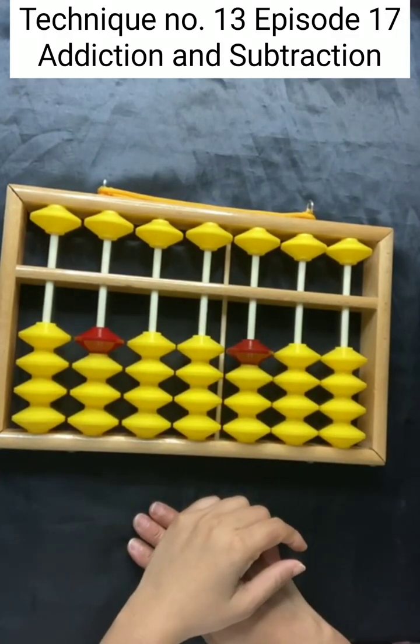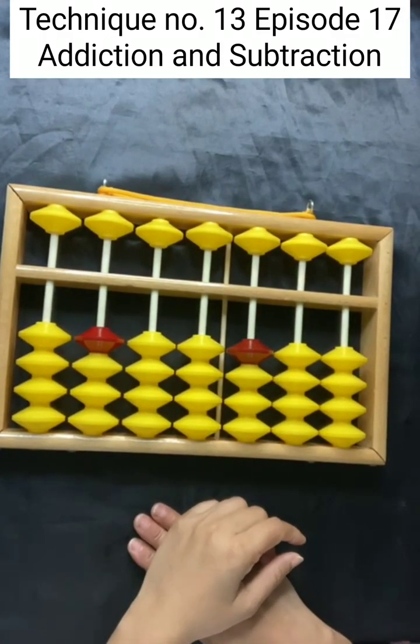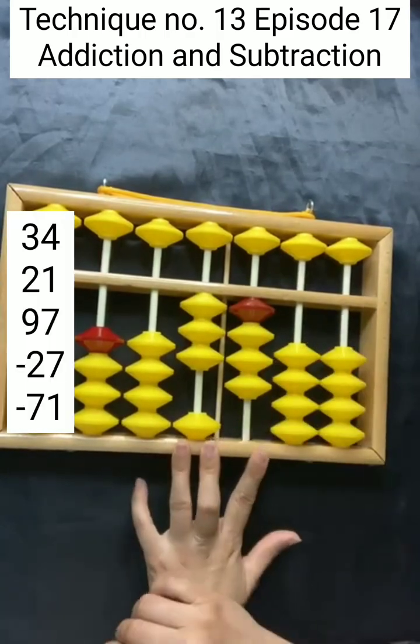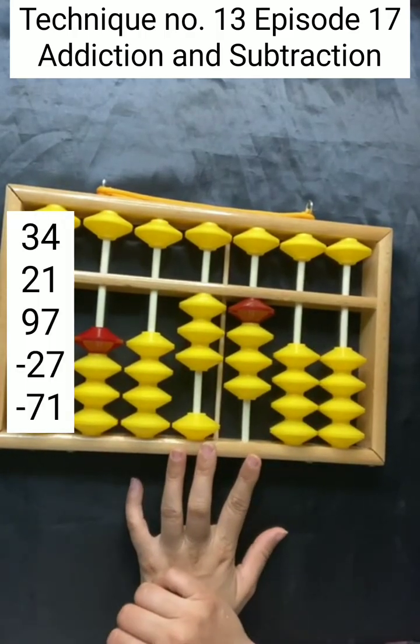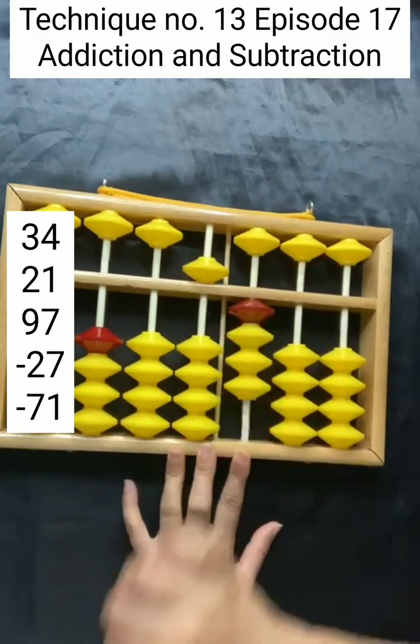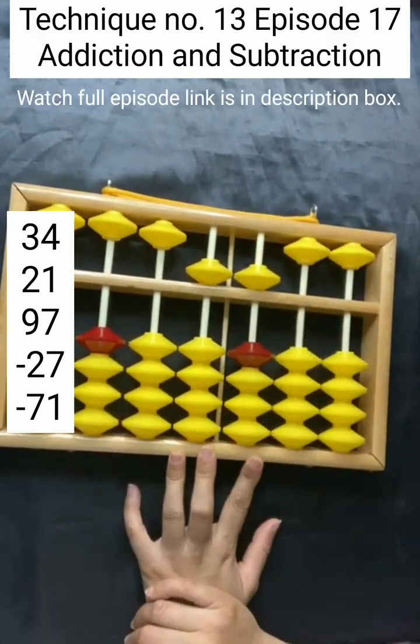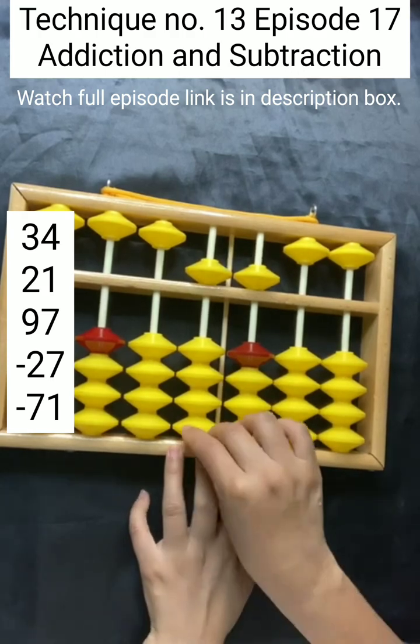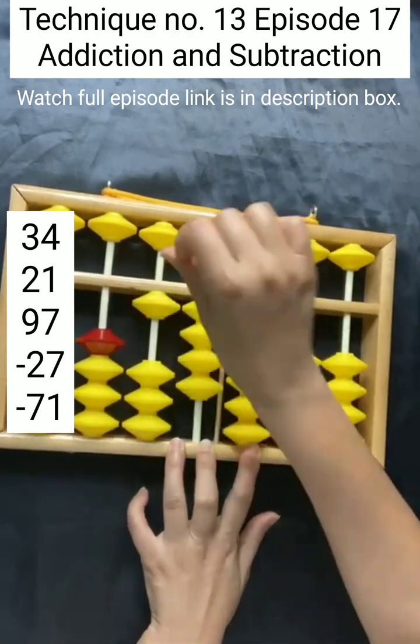Taking number 13, addition and subtraction on the abacus, episode 17. Place 34, next is place 21 to place 20. Borrow this 50, this is 20, and for one, borrow this five. Next is 97, add 40, reduce 50, borrow 100 for 90.